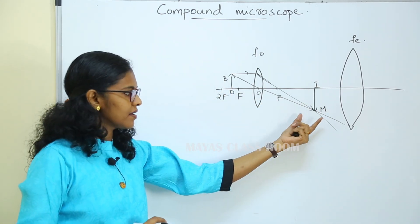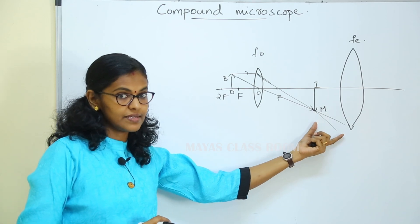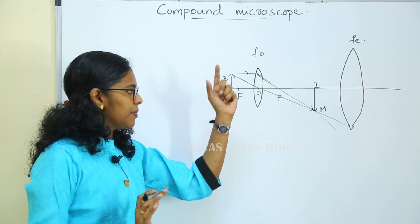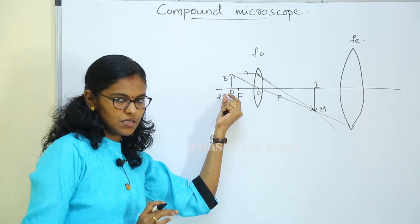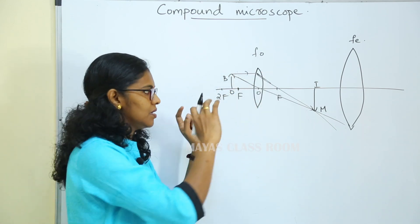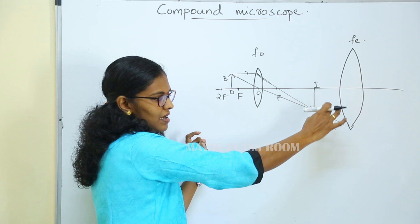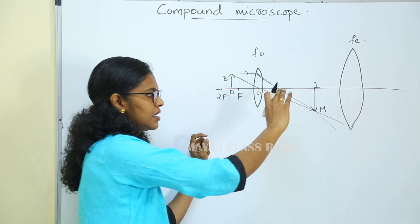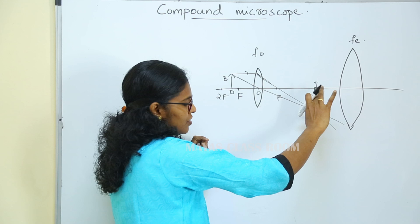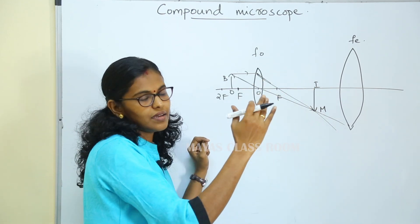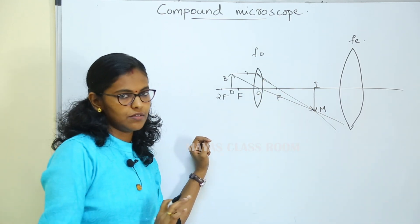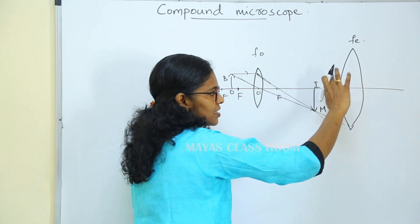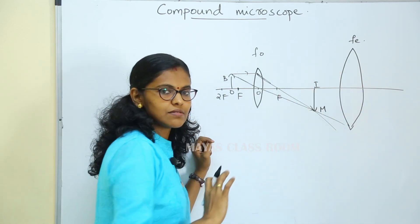The first image formed by the objective lens is a real image, and it is a magnified real image. This image then acts as an object for the eyepiece.